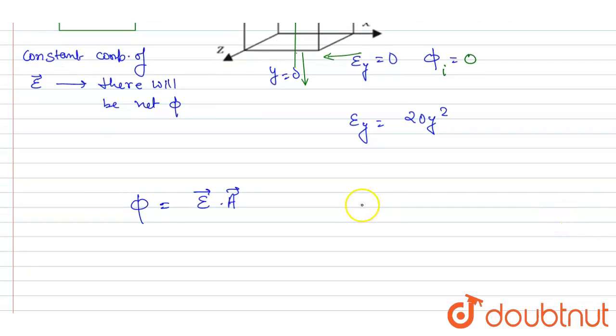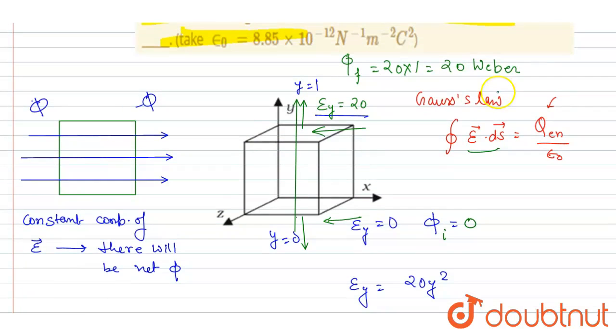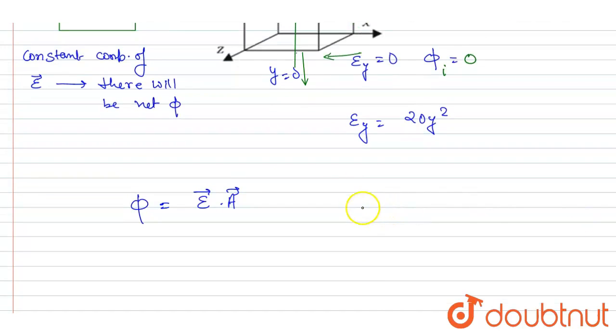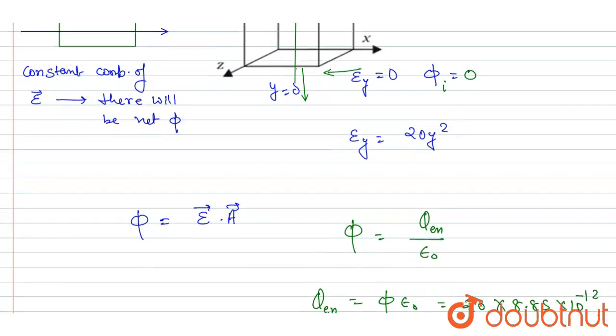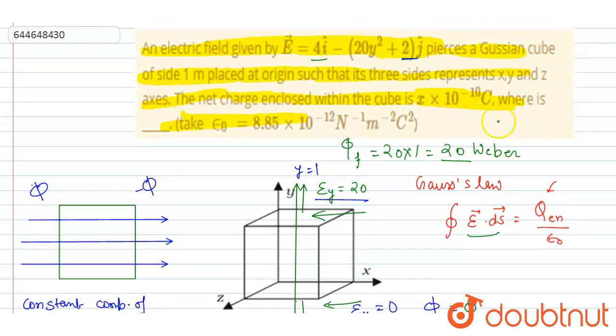The net flux equals q enclosed by epsilon naught. And the flux itself is 20, so I will write the q enclosed is flux times epsilon naught, and it is 20. And this epsilon naught is 8.85 times 10^-12.